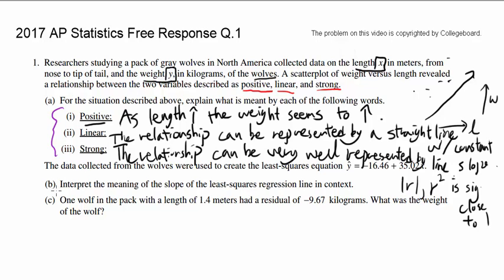Let's look at the next one, part B. Interpret the meaning of the slope of the least squares regression line, which is given here. Let me rewrite what they gave us. Y hat is equal to negative 16.46 plus 35.02X.